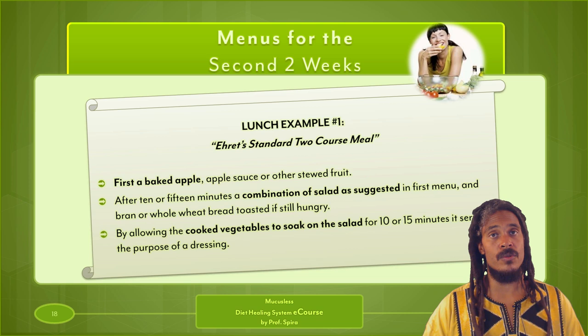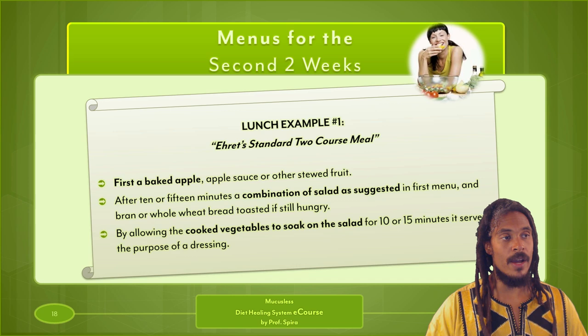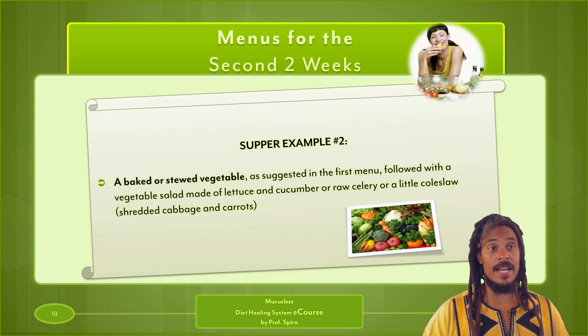The supper example for the second two weeks includes a baked or stewed vegetable followed by a vegetable salad made of lettuce and cucumber, a little coleslaw, shredded cabbage and carrots.